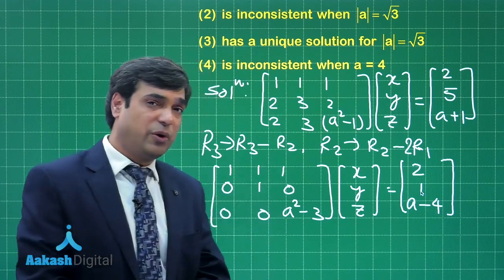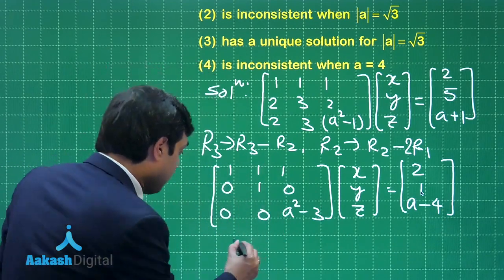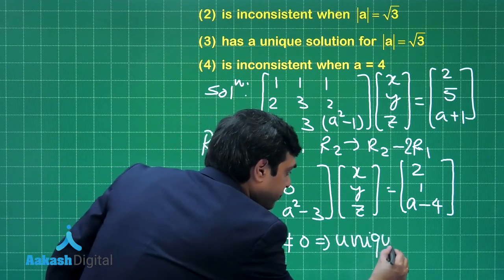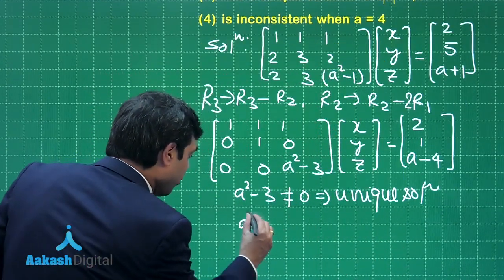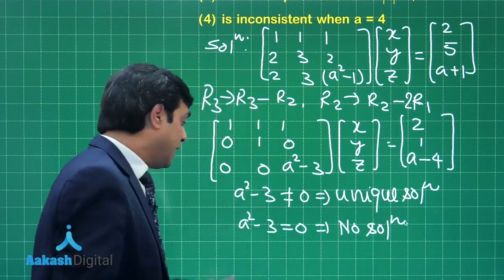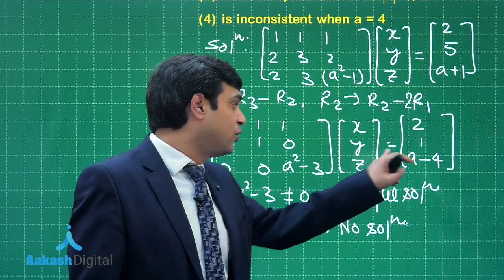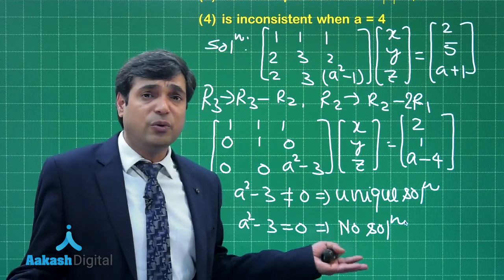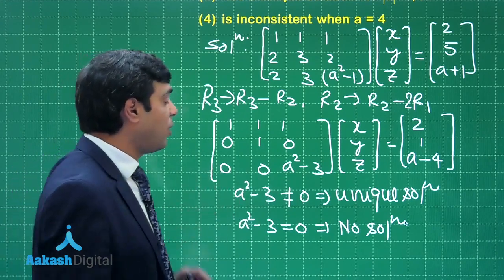Now when you talk about unique solution, what is the requirement? a²-3 should not be 0, that will give you unique solution. If a²-3 is 0, what will happen? No solution. Why? If a²-3 is 0, meaning a is ±√3. When a is ±√3, this row is 0, but if a is not equal to 4, it has a unique solution. If a equals 4, then we have this term non-zero, so a=4 is also giving me unique solution.